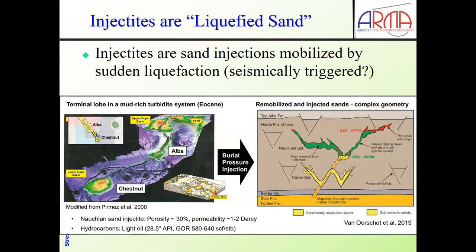Another lesson we encounter in the oil and gas industry is the injectites. We've learned that the injectites are injections of sand that is mobilized by sudden liquefaction. It could be seismically triggered and aided, of course, by the burial pressure, so that when a perturbation happens, liquefaction happens as the very high porosity sand structure collapses, and liquefaction is injected.